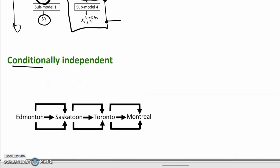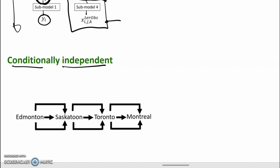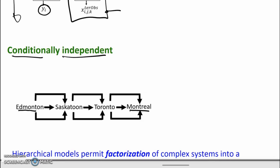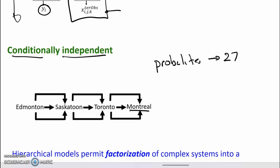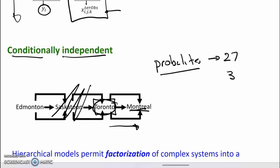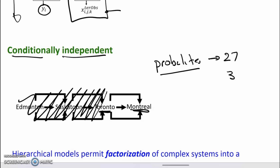We've got this notion of conditional independence. Consider an analogy: driving from Edmonton to Montreal, there are three ways to get from Edmonton to Saskatoon, three ways from Saskatoon to Toronto, and three ways from Toronto to Montreal — 27 probabilities in total. But once we're in Toronto, the number of probabilities for getting to Montreal is only three. Once we're in Toronto, in terms of getting to Montreal, we can ignore how we got there. The probability of taking any particular path from Toronto to Montreal is conditionally independent of the path used to get to Toronto.